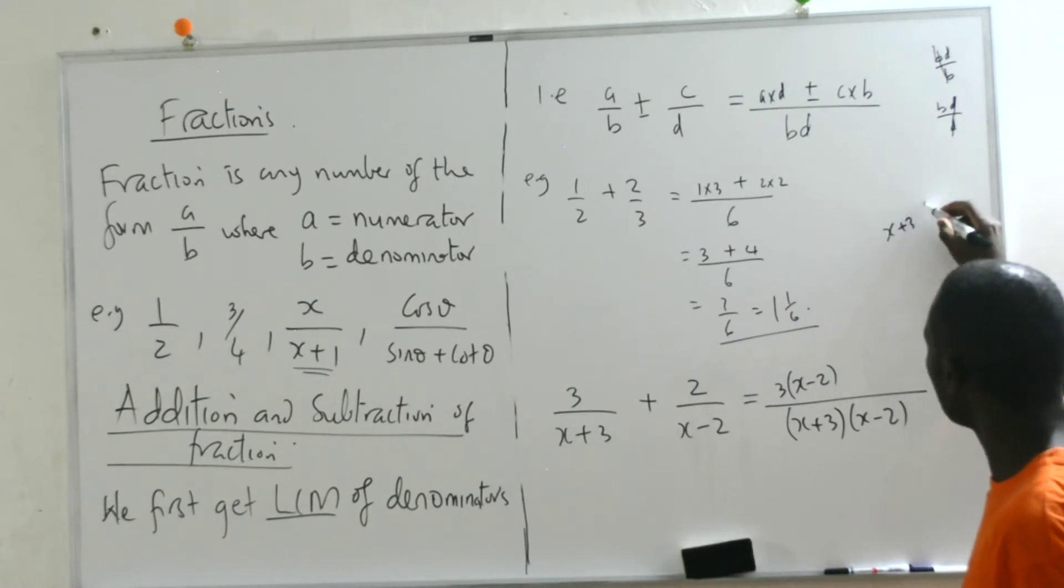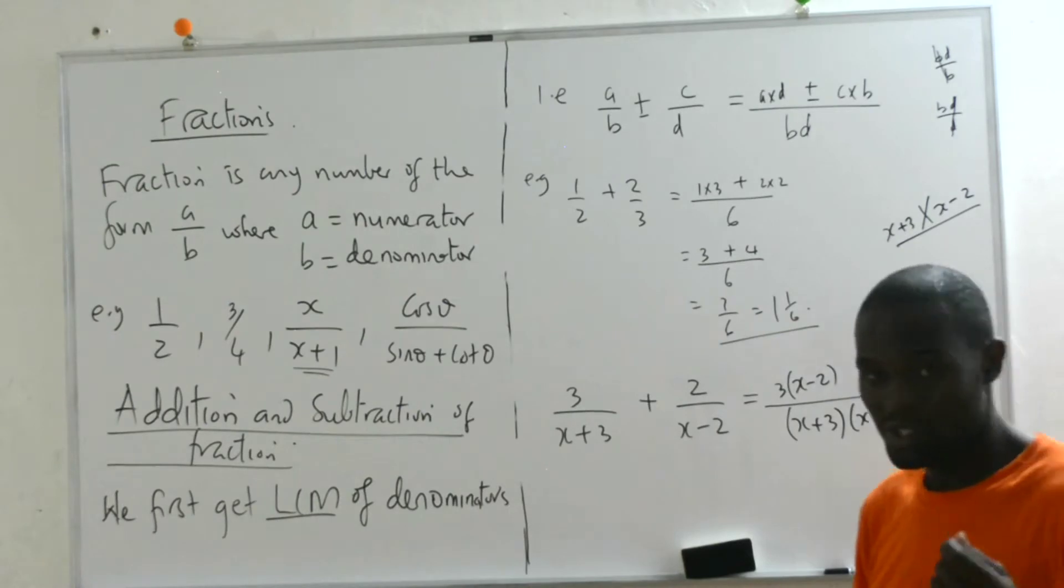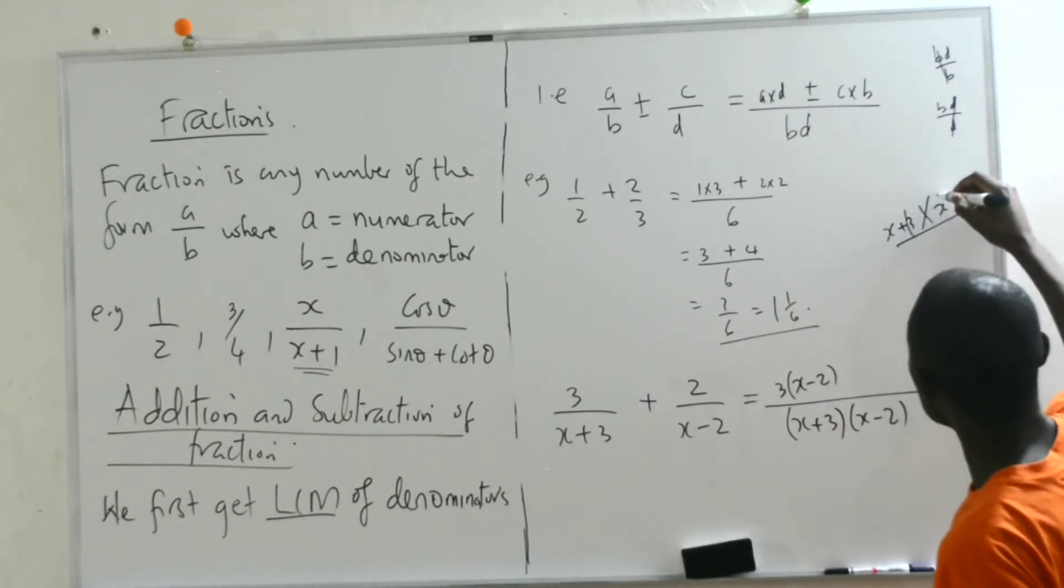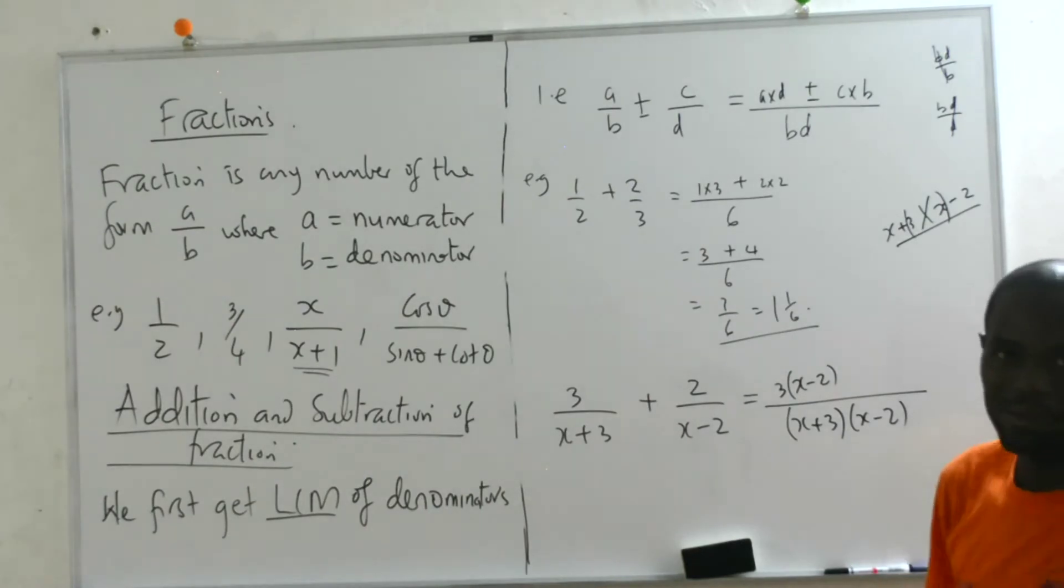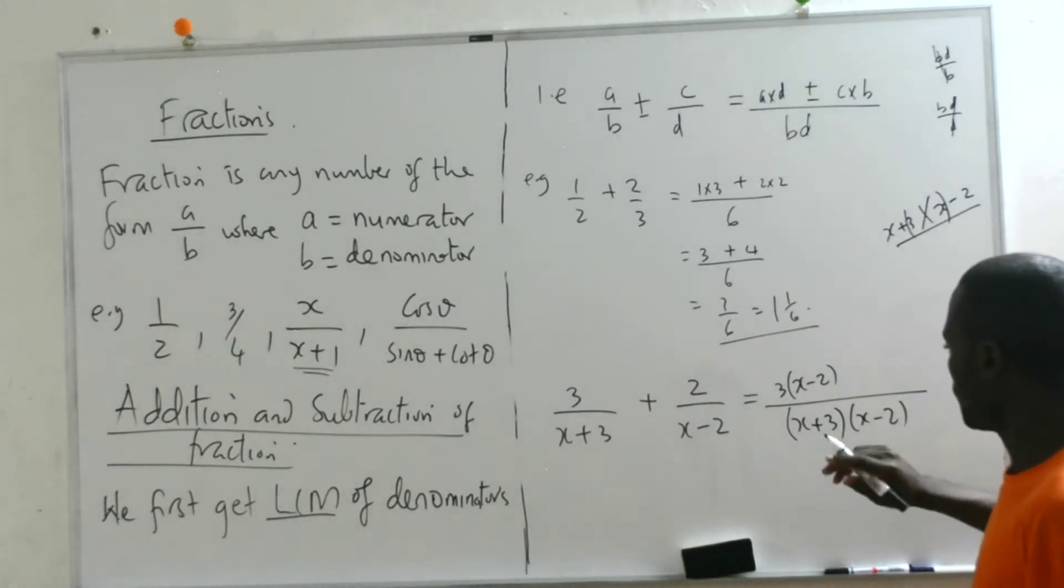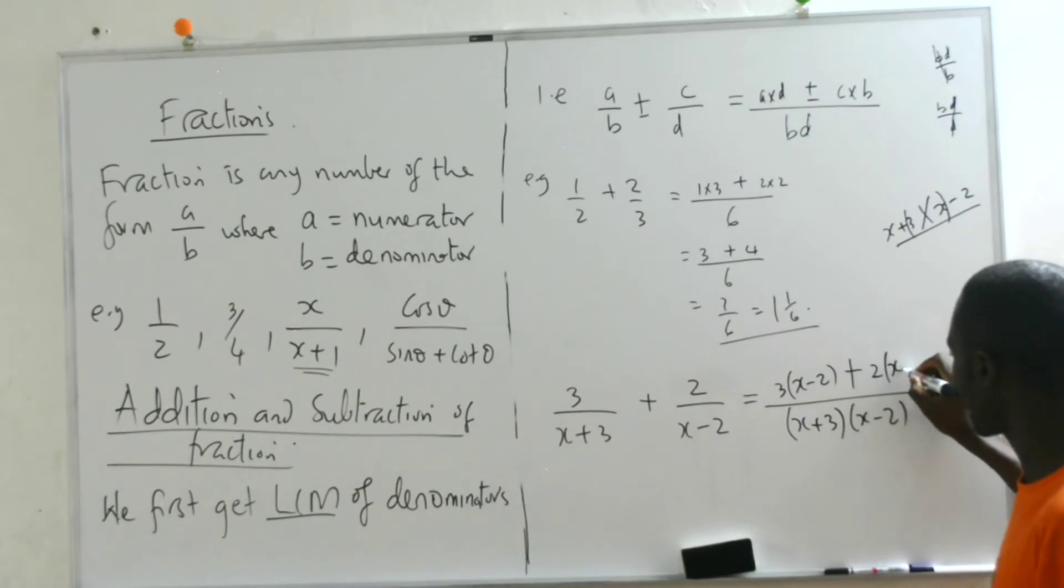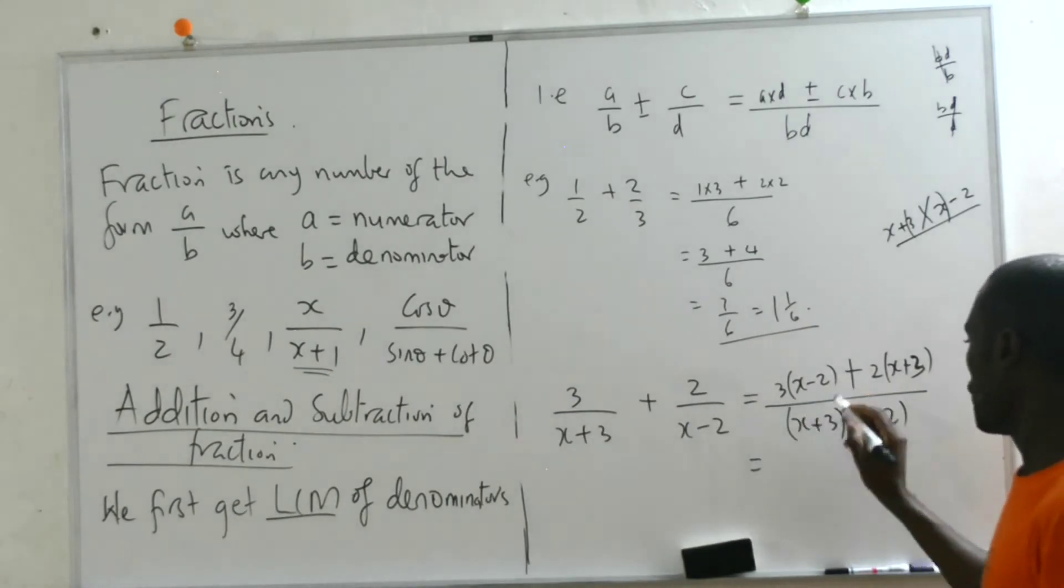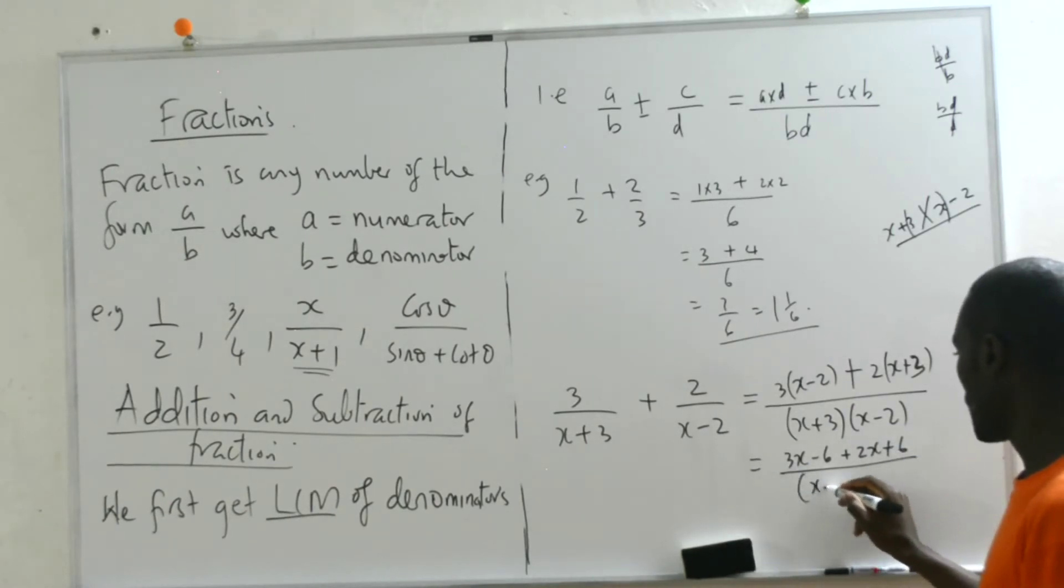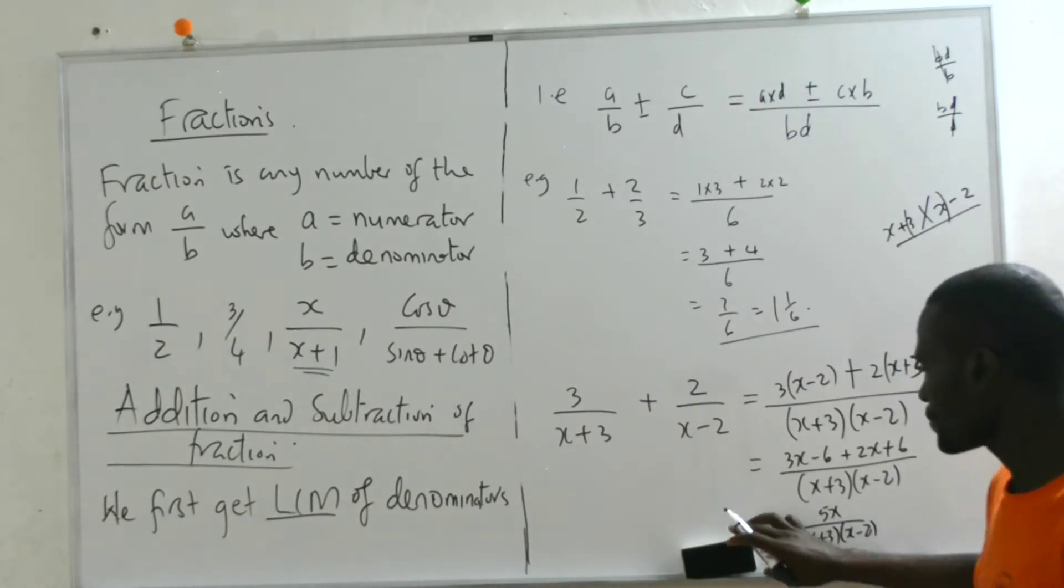But now if we are looking at numbers like this: 3 over (x+3) plus 2 over (x-2). The same thing I am going to do. When I take a product from these two, the LCM is (x+3)(x-2). The bracket here is really important because it means you are multiplying with the whole bracket. This becomes 3(x-2) plus 2(x+3) over (x+3)(x-2). When you open this, it becomes 3x minus 6 plus 2x plus 6, which equals 5x over (x+3)(x-2).